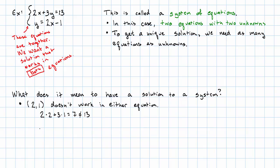Plugging into the second equation, 2 times 2 minus 1, that's 3, which is not 1. Okay, so 2, 1, definitely not a solution to the system.